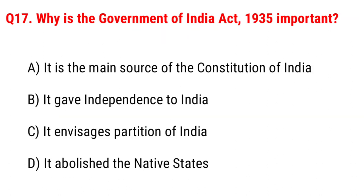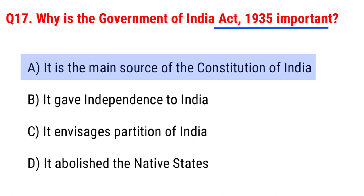Next question: why is the Government of India Act 1935 important? Option A, it is the main source of the Constitution of India; B, it gave independence to India; C, it envisaged partition of India; D, it abolished the native states. The right answer is Option A, it is the main source of the Constitution of India.